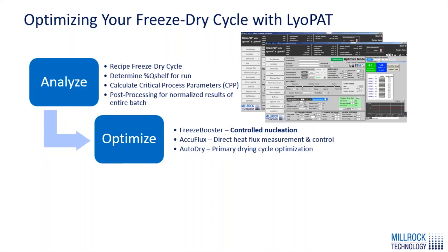We can then look to optimizing the run using the various optimization features: FreezeBooster for controlled nucleation, AccuFlux for direct heat flux measurement and control post-nucleation, and AutoDry for primary drying cycle optimization. Two out of three of these features are built around optimizing the freezing side of the recipe — only AutoDry works in primary drying. The foundation of an optimized protocol occurs in the freezing phase, when you're developing the frozen crystal structure that determines many critical quality attributes of your final dried cake.